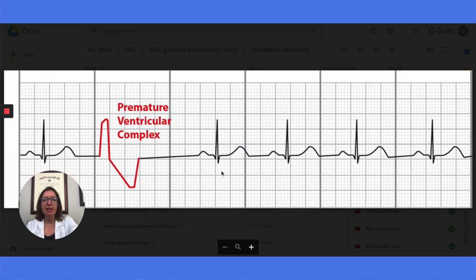When we look at this strip, we can see that the right-hand side looks really normal. We've got nice little P waves followed by a nice narrow QRS complex. Our rhythm looks regular and our rate looks about right. But what went down over here? Well, what went down is a premature ventricular complex or PVC.